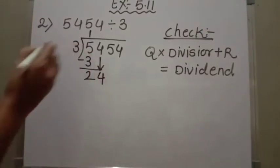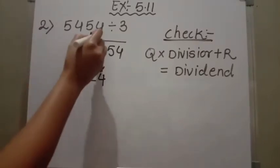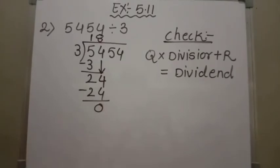Let us divide 24 by 3. Say the table of 3 till you get 24. 3 eights are 24. 24 minus 24 equals 0.